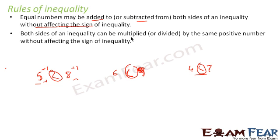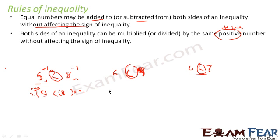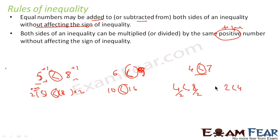The second rule: both sides of an inequality can be multiplied or divided by the same positive number without affecting the sign. For example, 5 is less than 8; multiplying both sides by 2 gives 10 is less than 16 — sign unchanged. Similarly, 4 is less than 8; dividing both sides by 2 gives 2 is less than 4 — sign unchanged. Note: positive is very crucial here.